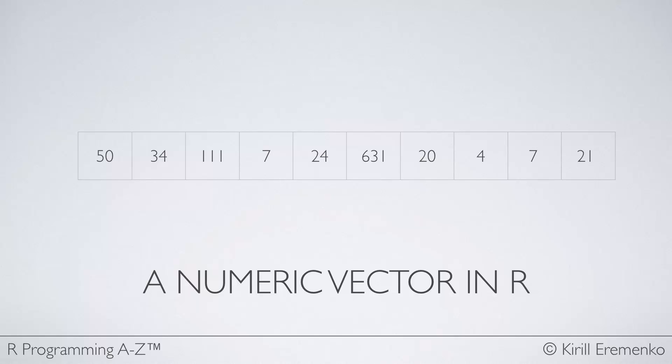Numeric basically means either integer or double. So basically anything that has a number. So this is a numeric vector of length 10. And if you've studied other programming languages before then a vector in R is the same thing as an array for example in C or C++ or pretty much in any other language. It's just called different.